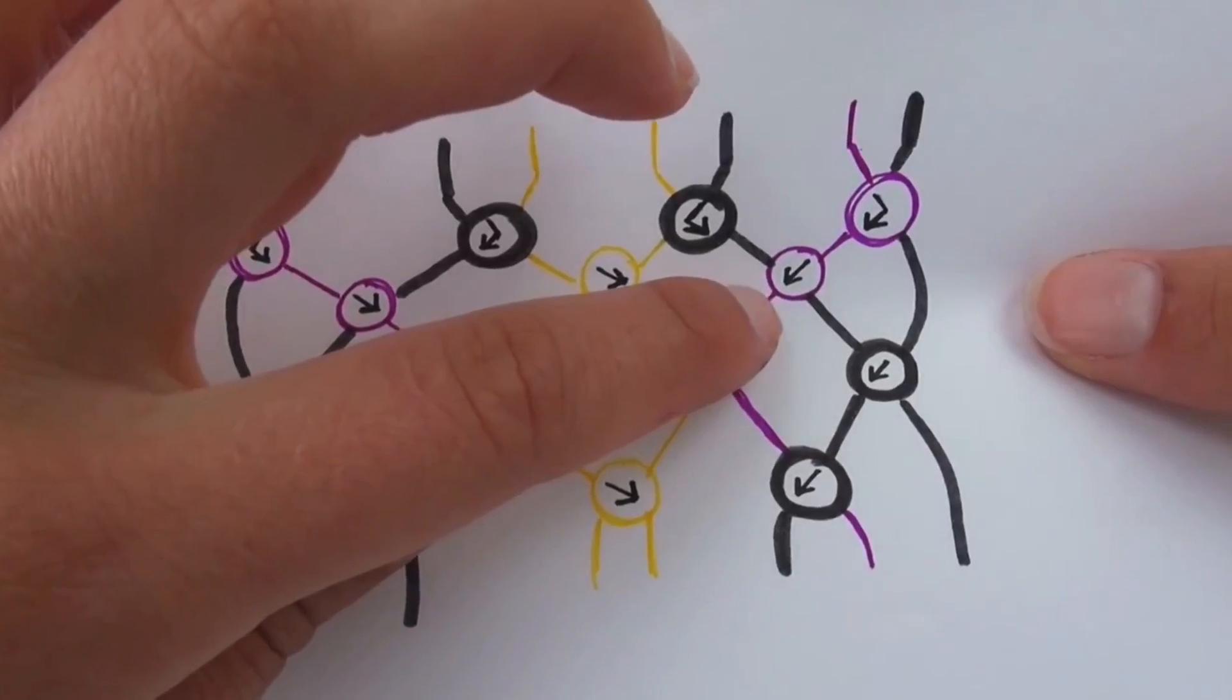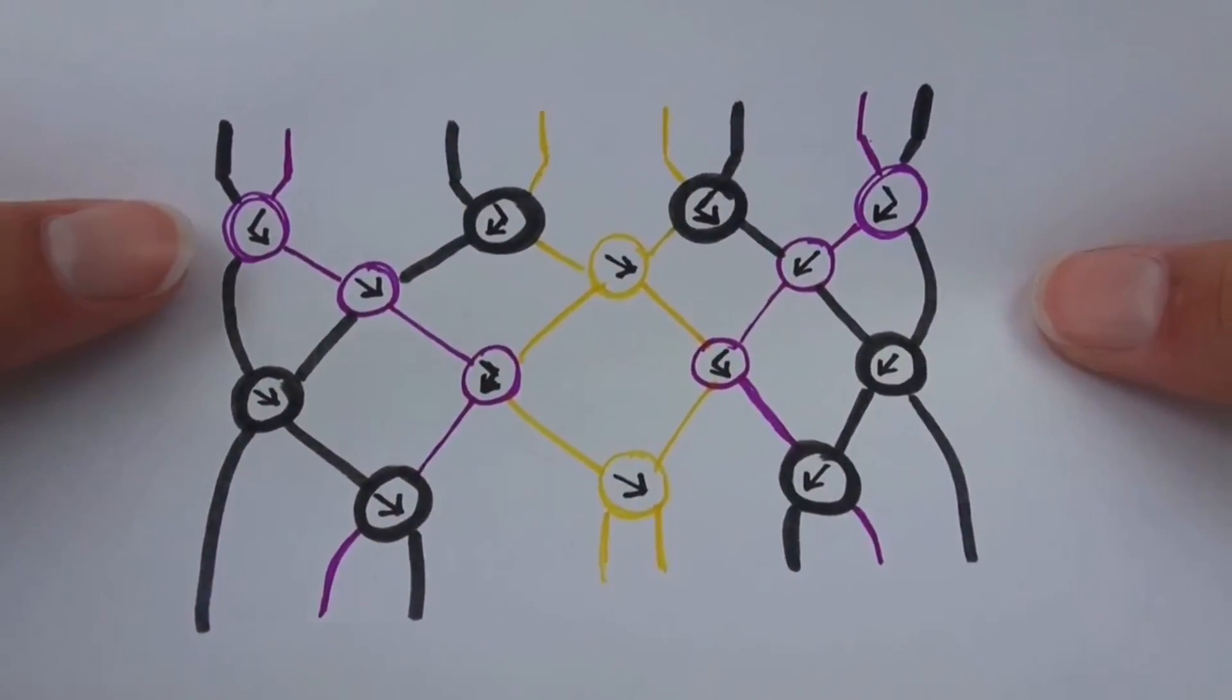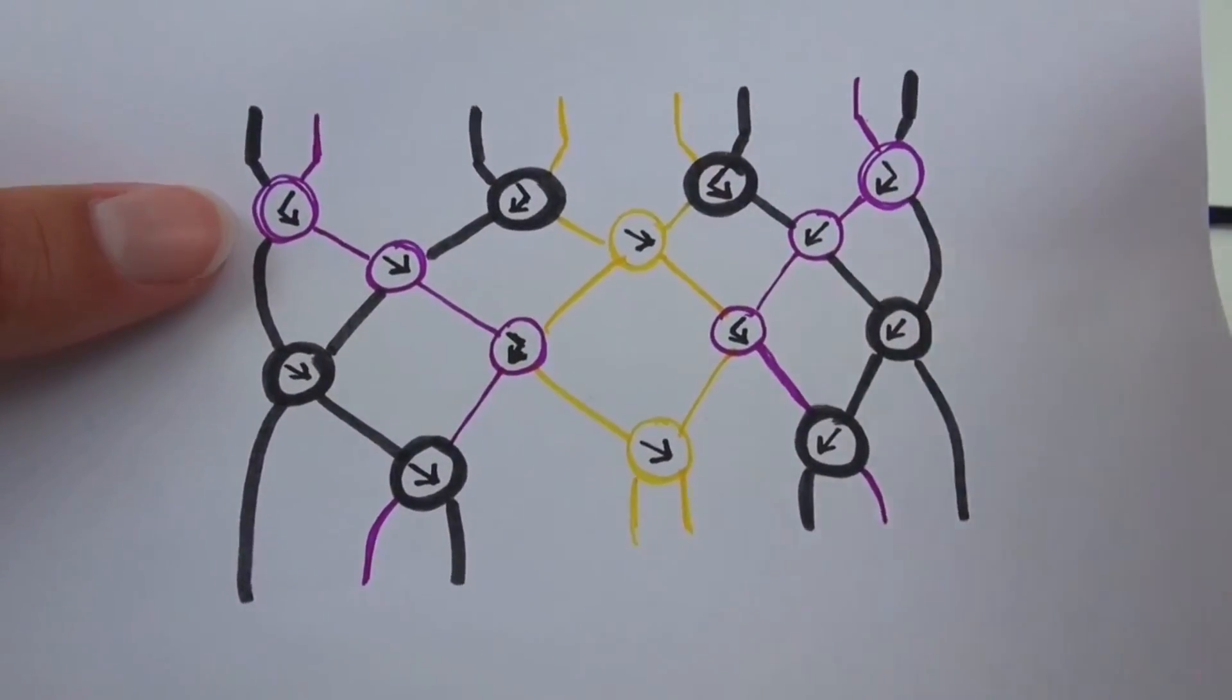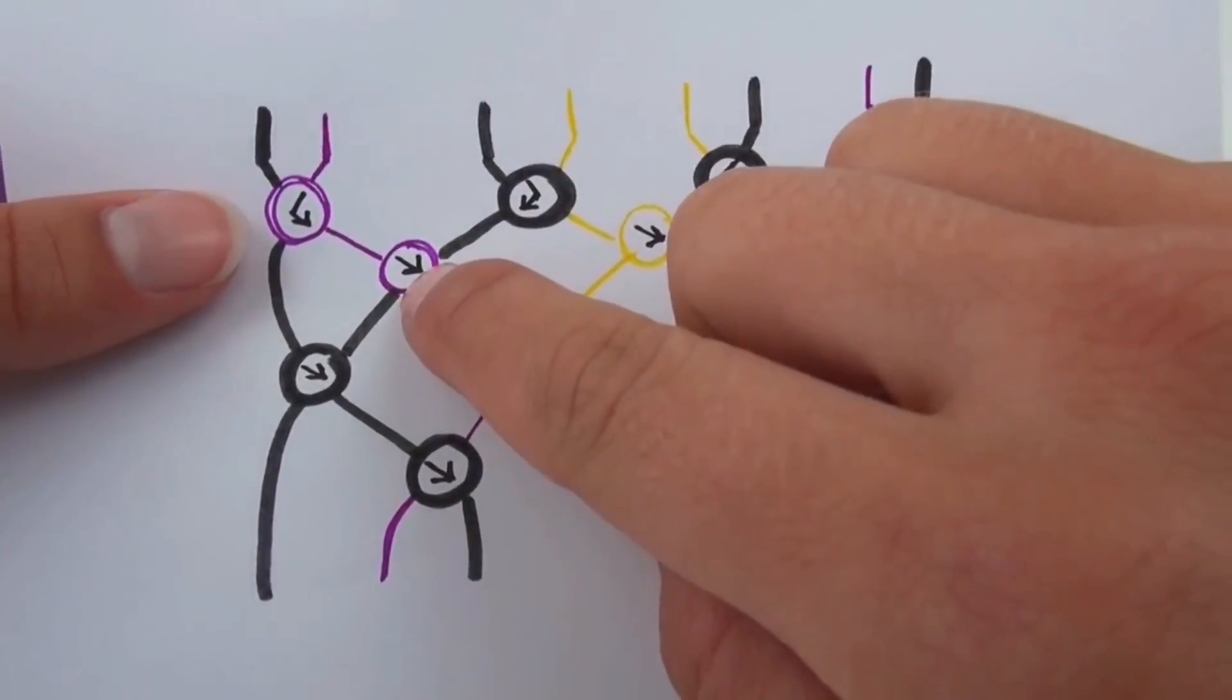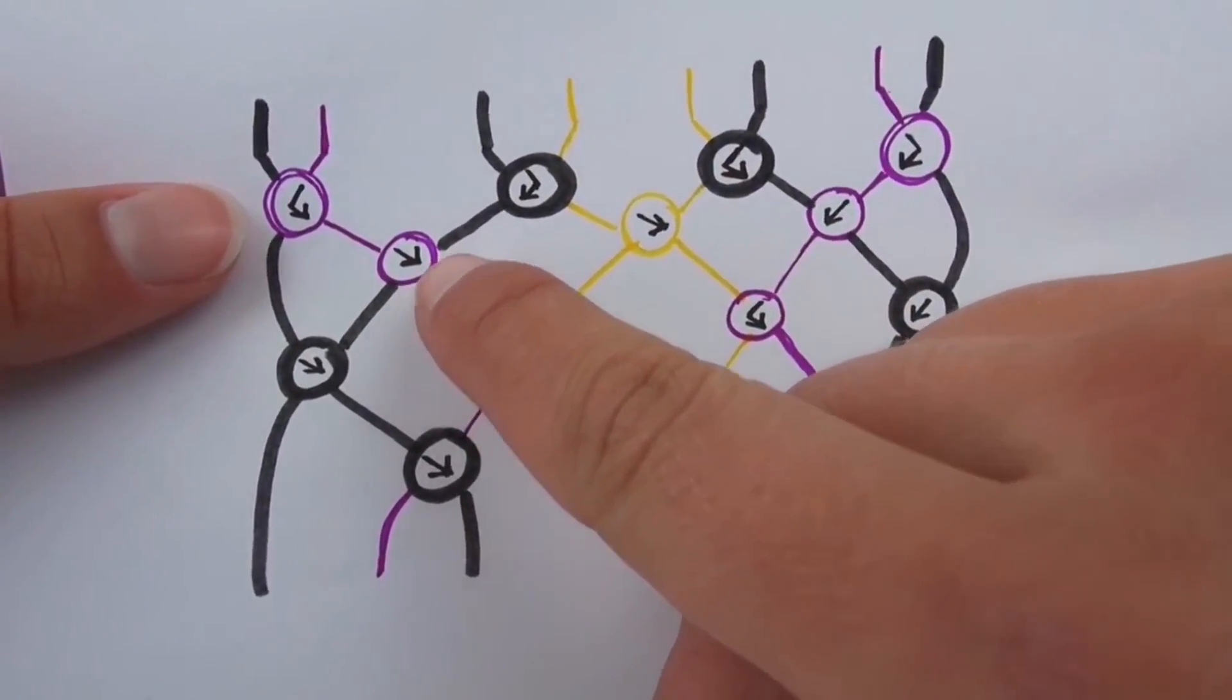We have knots going to the left and we have knots going towards the right. When arrows point towards the right, you make two knots towards the right. When arrows point towards the left, you make two knots towards the left.